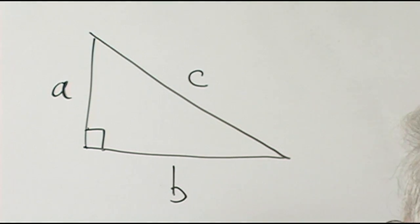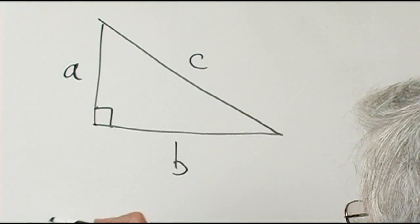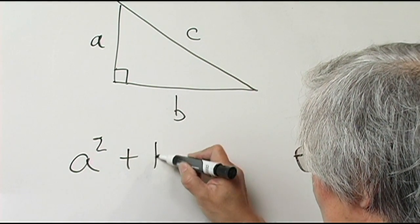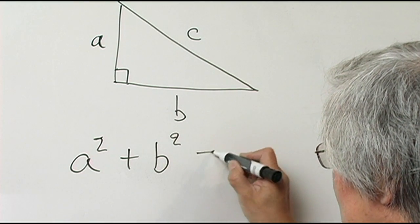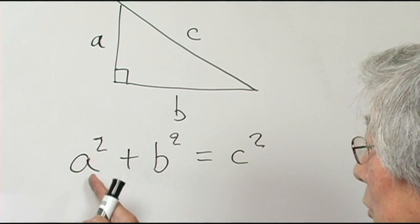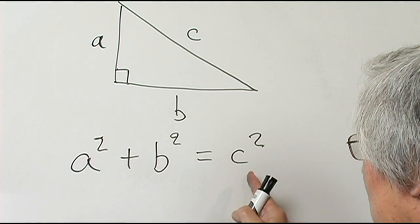The Pythagorean theorem states that the sum of the squares of the sides is equal to the square of the hypotenuse. So A squared plus B squared equals C squared.